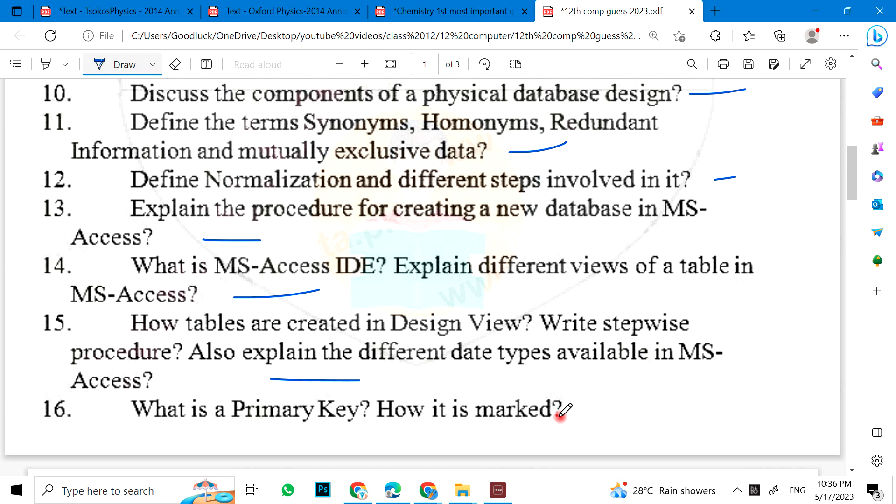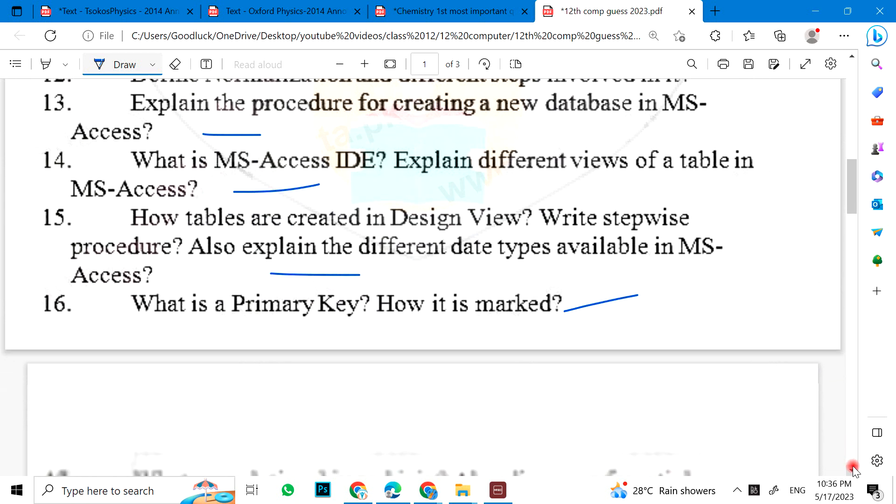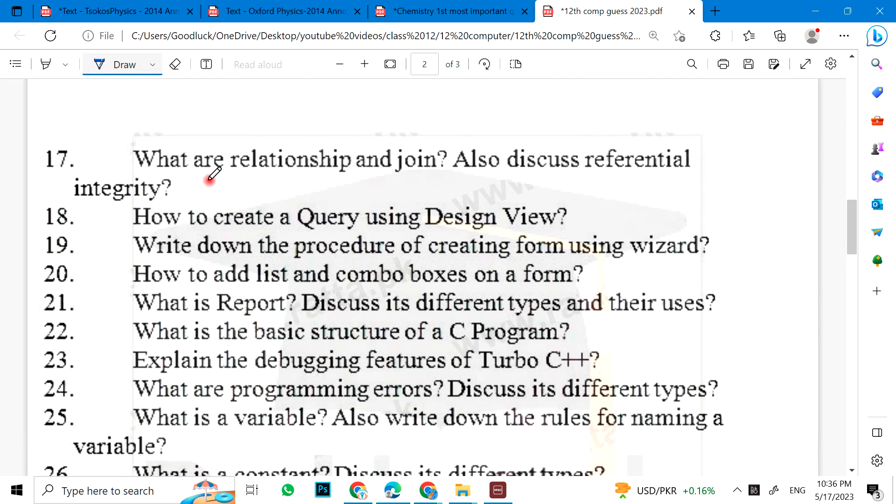15. What is the primary key? How it is marked? 16. What are relationships and join? How to create a query using Design View? 17. Write down the procedure of creating form using wizard. How to add lists and combo boxes on a form. 18. What is the report? Discuss different types and their uses.